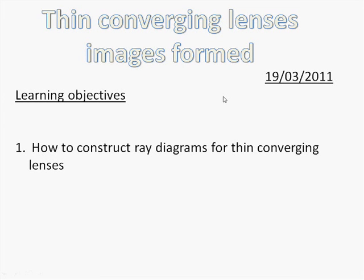This is a video about thin converging lenses and how images are formed. Thin converging lenses are like the kind of thing you have in your eyeball, and they're used in lots of devices like cameras, projectors, and magnifying glasses. We're going to look at how to construct ray diagrams to actually explain how they form images.